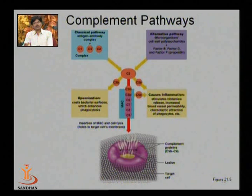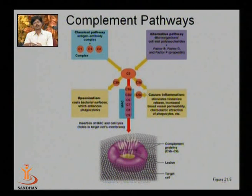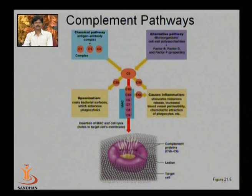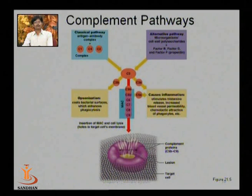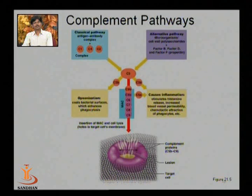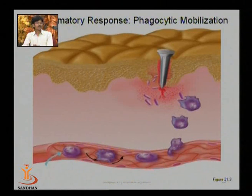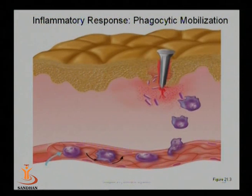There are three complement activation pathways: the classical complement activation pathway (starting with C1), the alternative pathway (starting at C3 or C4 without C1), and the lectin pathway.